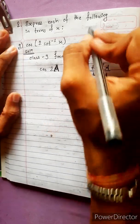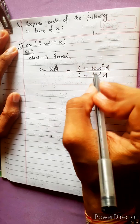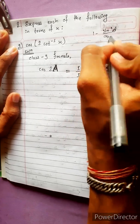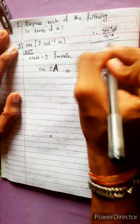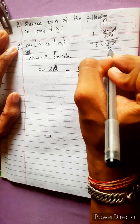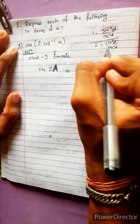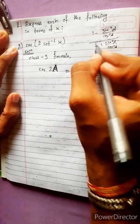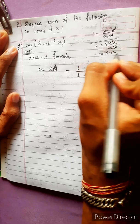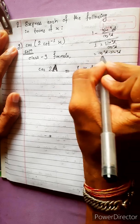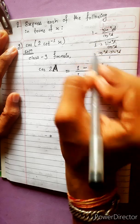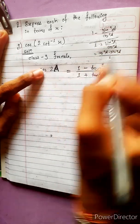Let's prove it. Starting with sin squared a by cos squared a, we get 1 minus sin squared a by cos squared a divided by 1 plus sin squared a by cos squared a, which gives cos squared a minus sin squared a over cos squared a plus sin squared a. So cos 2a is proved.